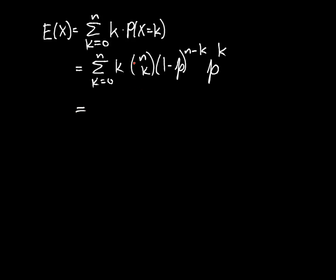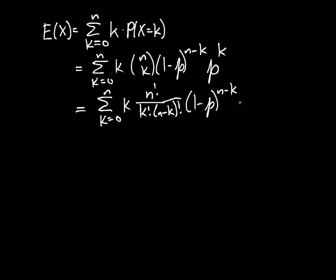I'm going to turn this binomial coefficient into a quotient of factorials: n factorial over k factorial times n minus k factorial, and then the remaining factors stay the same. Notice that if I plug in k equals 0, I have a factor of k out front, so this entire expression is just 0. So I can start my sum at k equals 1 — all I've done is lost a term of 0, which doesn't change the value. Now I want to peel the k off of this factorial.